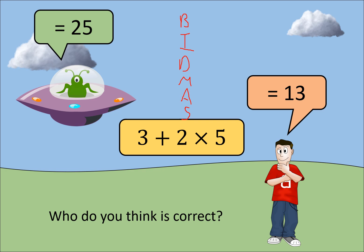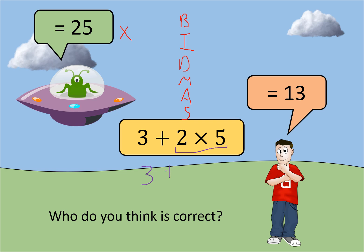Here's the calculation: 3 plus 2 times 5. One person is saying 13 and the aliens in the spaceship are saying 25. Why are we getting two different answers? One approach says 3 plus 2 is 5, then 5 times 5 is 25 — but that's actually incorrect. The correct method is to do the multiplication before the addition, so we do 2 times 5 first, which is 10, then 3 plus 10 equals 13.